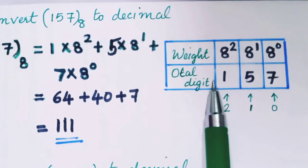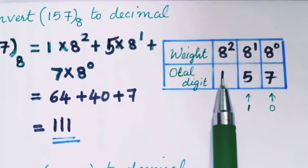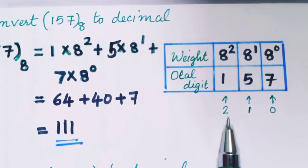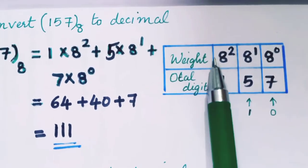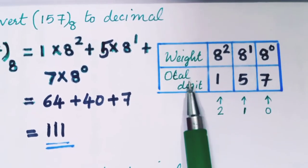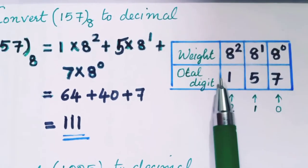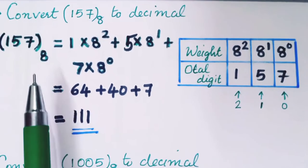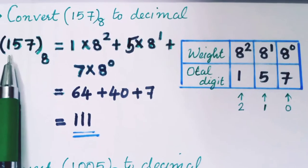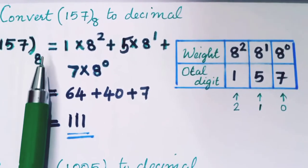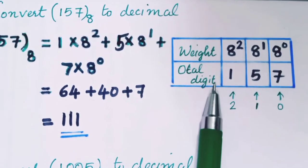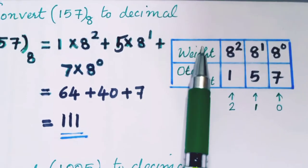Digit 1 is at position 2 and gets weight 8 raise to 2. So the formula is: 157 in base 8 equals (1 × 8²) + (5 × 8¹) + (7 × 8⁰).